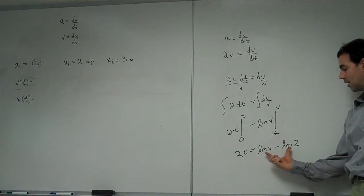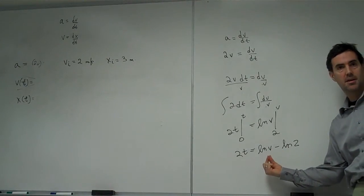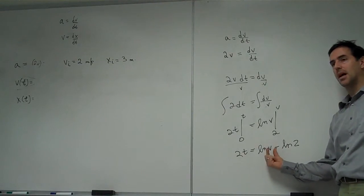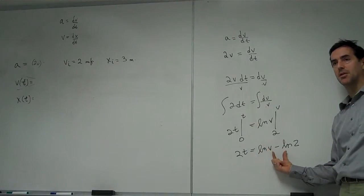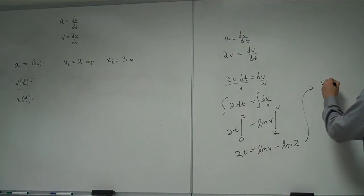The lns can be combined. They can be combined as ln(v/2). So we get 2t equals ln(v/2). It's a property of the natural logs.